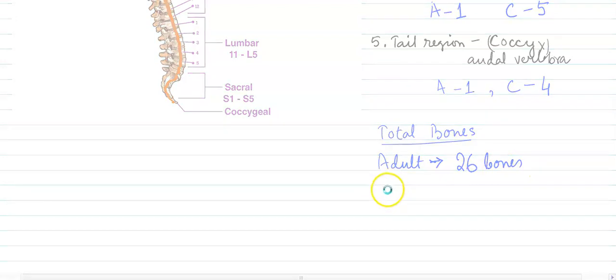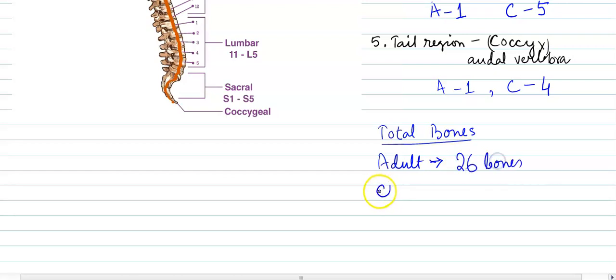But in child's condition, the vertebral column is 33 bones. Child's condition is 33 bones. Now let's discuss some tough questions, let's discuss some of the related questions.